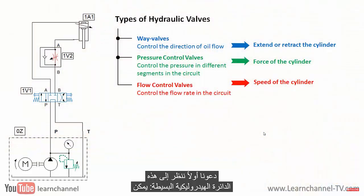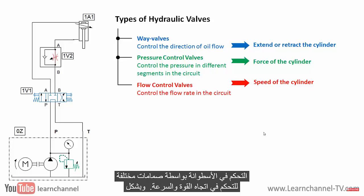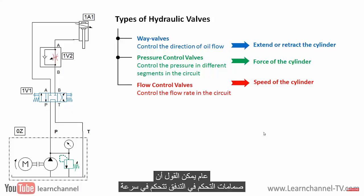Let us first consider this simple hydraulic circuit. The cylinder can be controlled by different valves to control the direction, force, and speed. In general, flow control valves control the speed of a cylinder or the rotational speed of a hydraulic motor.